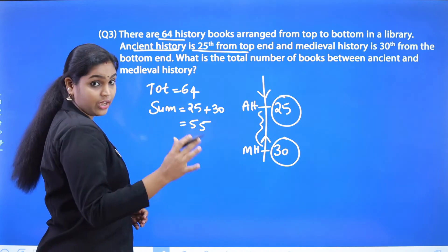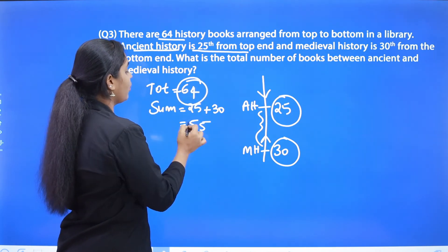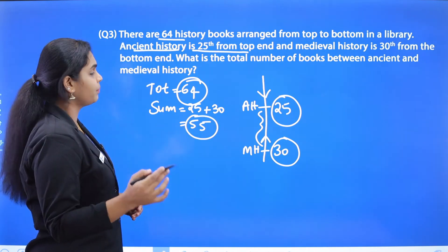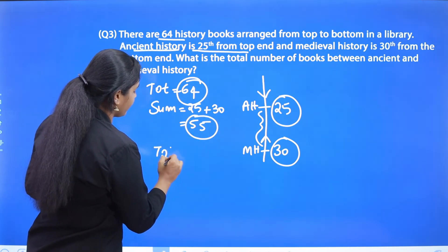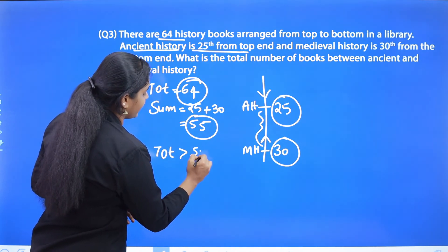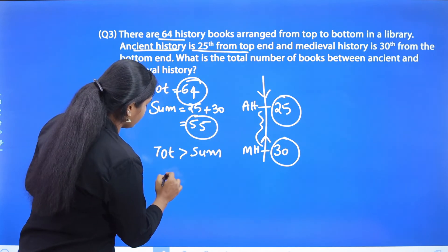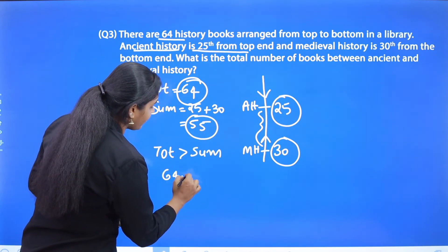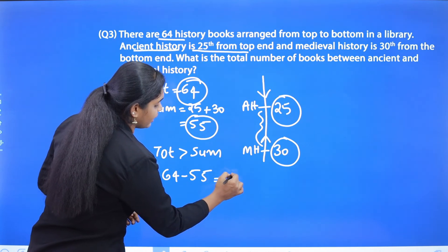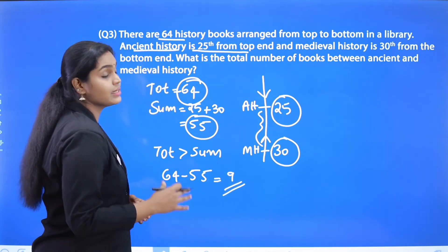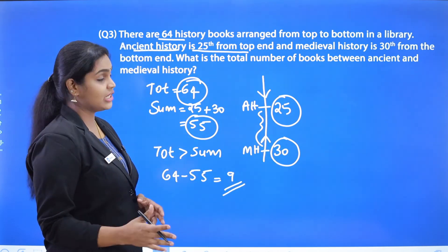Now we compare the total value and the sum. The total is greater — 64 is greater than 55. So we take 64 minus 55, which is 9. That means there are 9 books between Ancient and Medieval History.